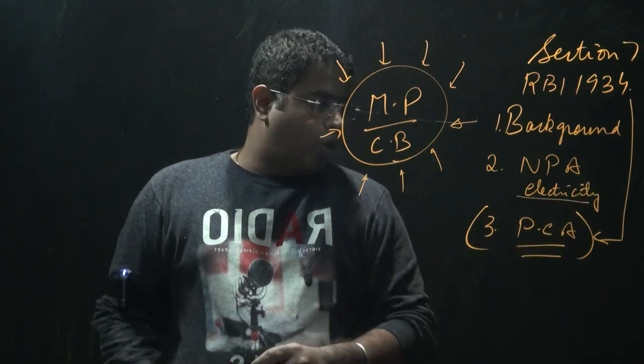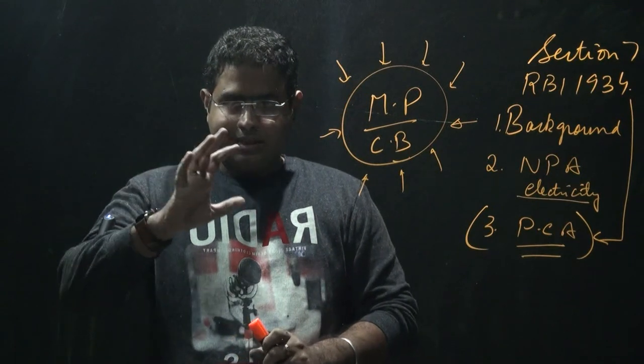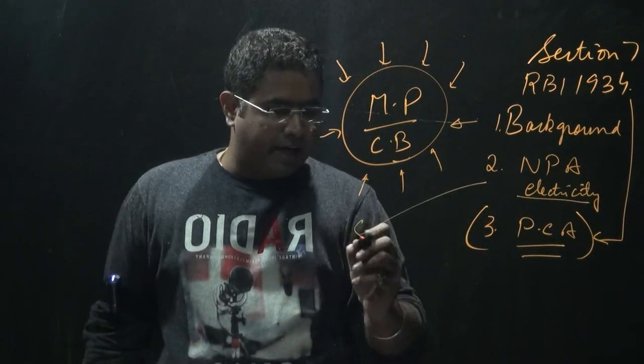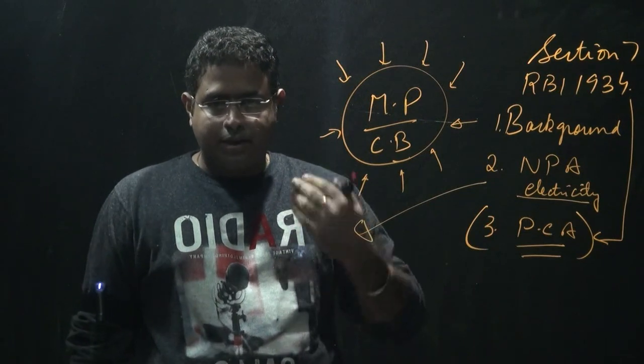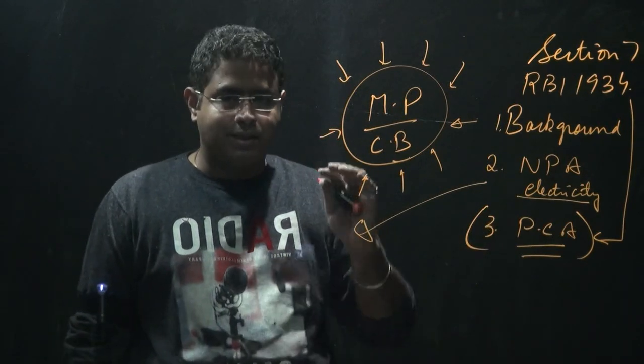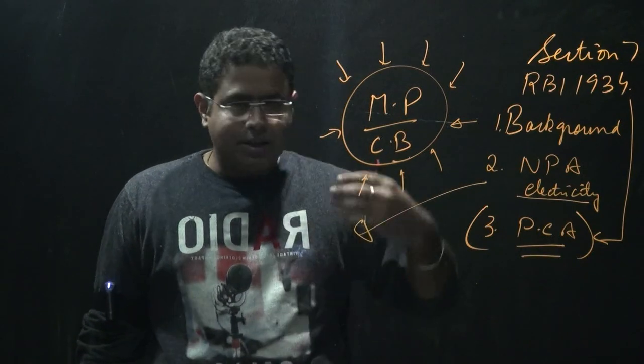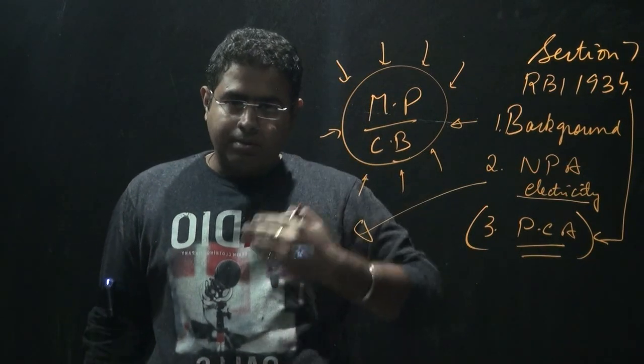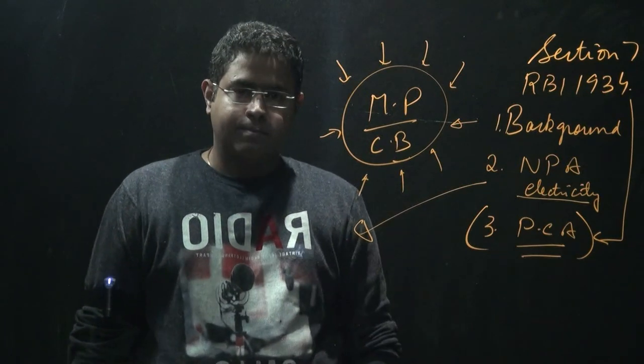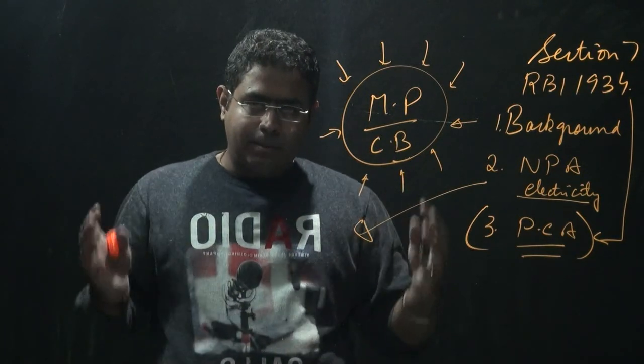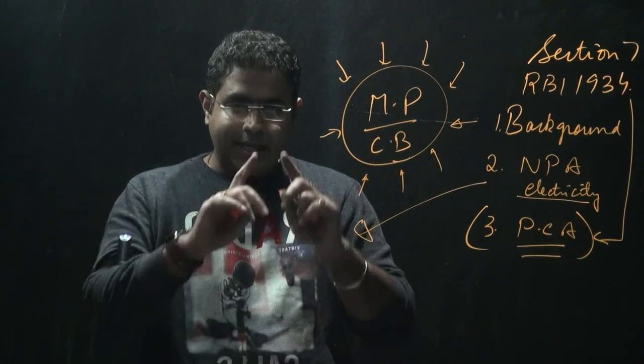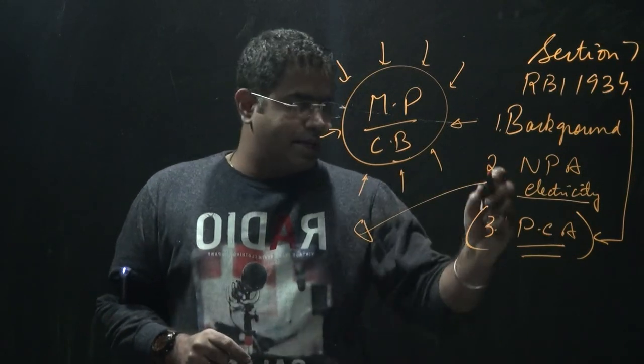Now the second important thing is non-performing assets in the electricity sector. Now presently RBI has defined the standard: if a distribution company doesn't pay a loan to the bank for one day, then it will be categorized in the NPA category. So it is not likely to be able to return back the money to the banks. So the banks categorize it as NPA. This again is not liked by the government.